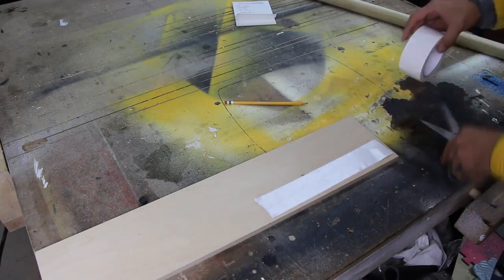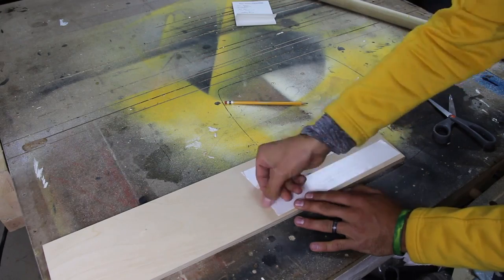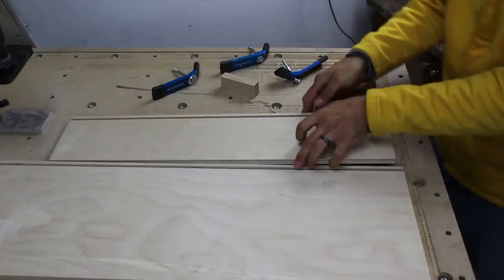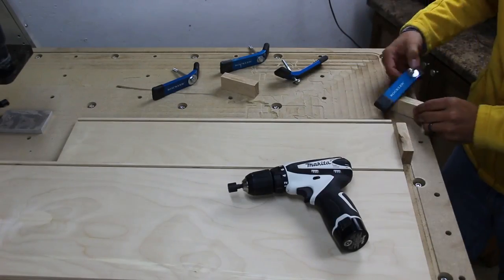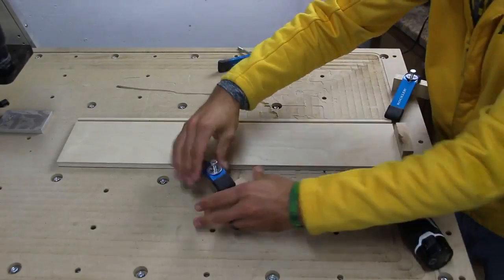I use double sided tape in the area where the parts will be cut out. This will keep the parts in place when they are cut free. I use a wide board to set the workpiece parallel to my X axis and then I use 4 aluminum hold downs to secure the workpiece.